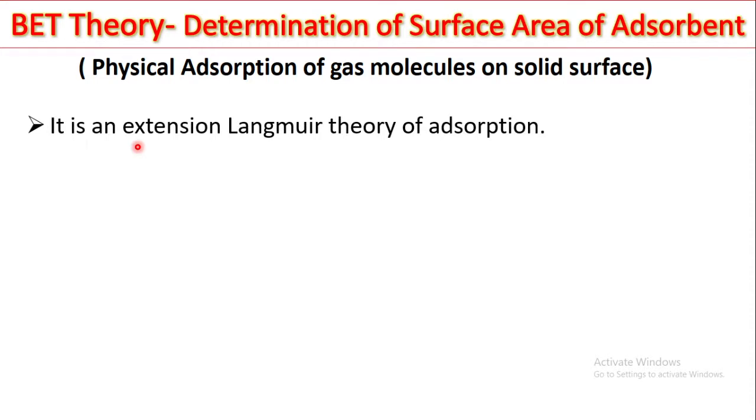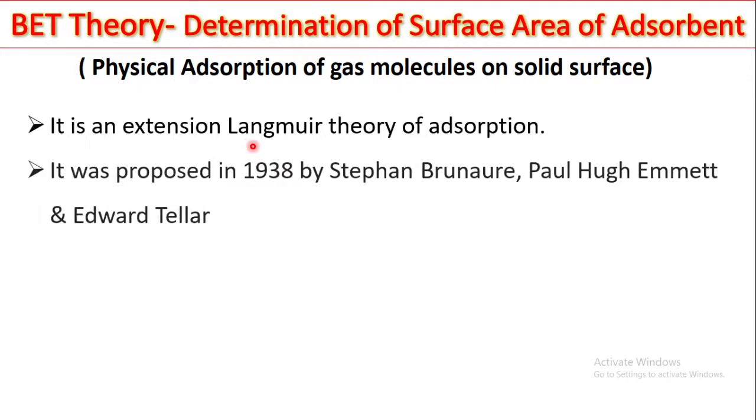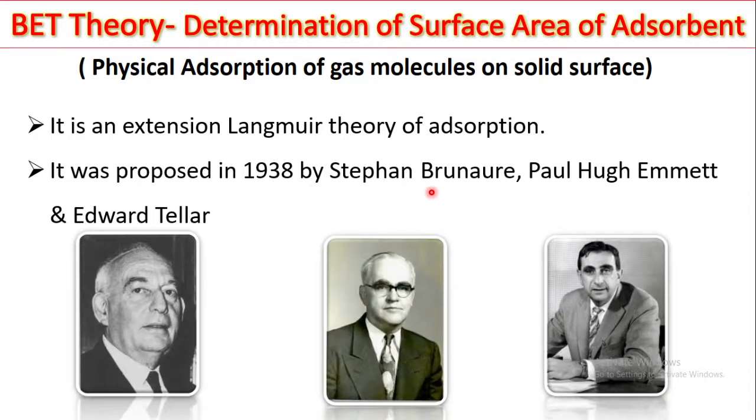This BET theory is an extension of Langmuir adsorption isotherm. It was proposed in 1938 by Stephen Brunner, Paul Hugh Emmett and Edward Teller. These are the three great scientists who proposed this theory and based on their contribution, this adsorption theory is known as BET theory that is Brunner, Emmett and Teller theory of adsorption.